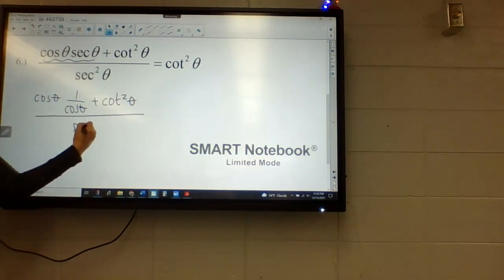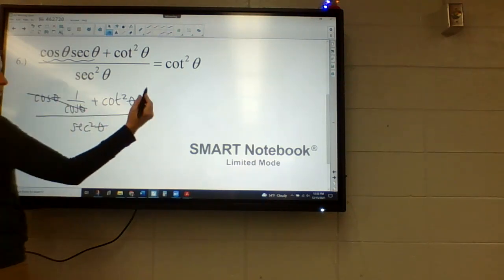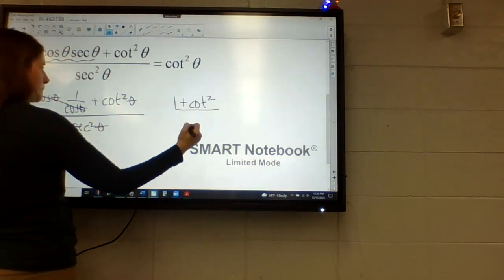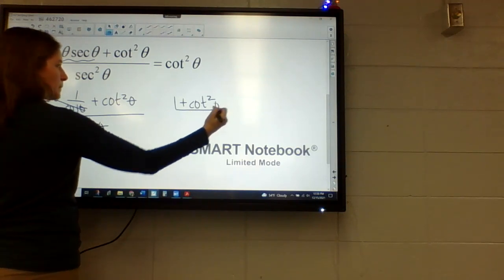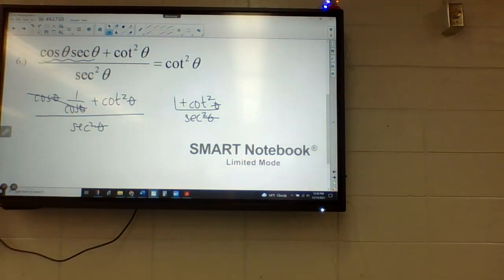And I'm going to kind of do baby steps with this one, because there is a lot in it. So this cancels here. So that becomes one. So I'm going to go over here with that. Now, why that's good is because one over cotangent squared should be something we know, right?